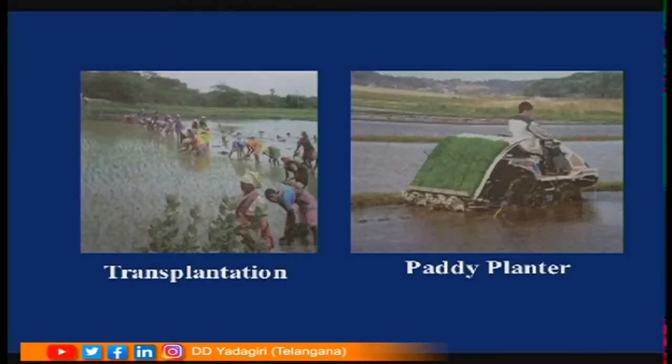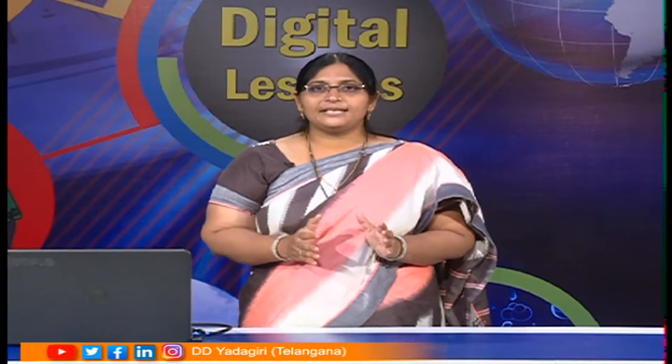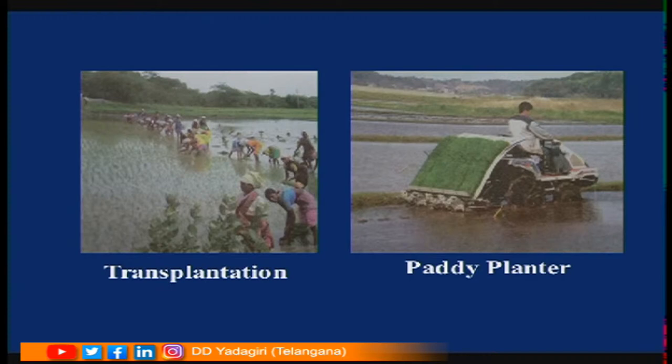For paddy specifically, farmers first select the land, divide it into small areas called madulu or kayalu, and grow rice seedlings there. This area is called a nursery. Once the plants have developed in the nursery, they are transferred to the main field. This process of transferring plants from nursery to the main field is called transplantation.